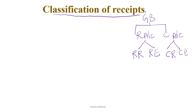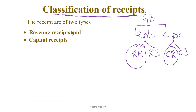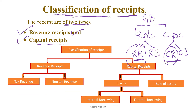As today we are discussing classification of receipts of the government budget, we have two types: the first one is revenue receipts and the second one is capital receipts. You can see in the flowchart: revenue receipts are further divided into tax revenue and non-tax revenue, while capital receipts are of two types — loans and sale of assets.